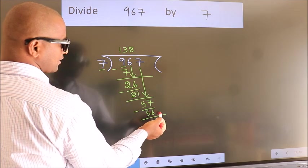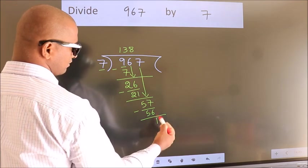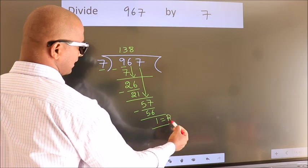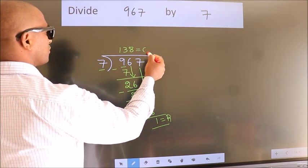No more numbers to bring down. So we stop here. This is our remainder. This is our quotient.